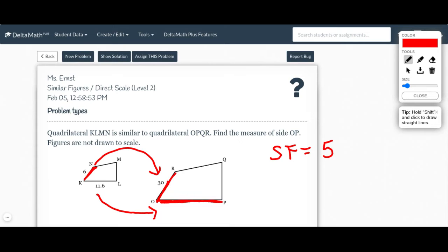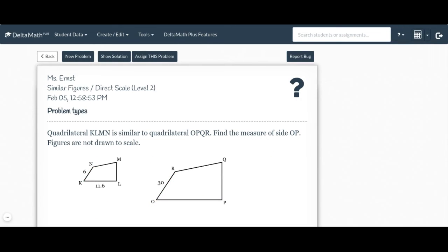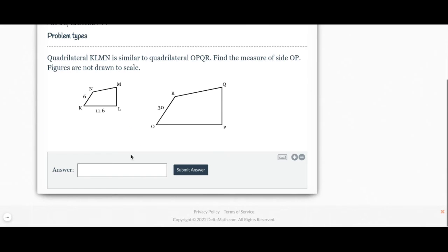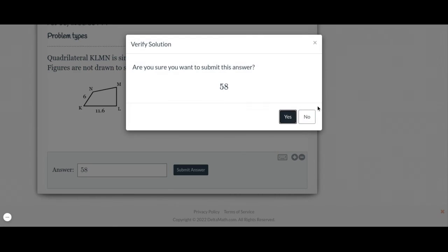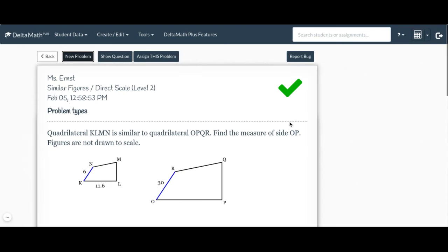So I'm going to use that same scale factor and I'm going to take 11.6 times 5 to get me that side OP that I need there. And that's going to be the answer that we're looking for. So when I do that, I get 58. So I'm going to go ahead and type that in and see if we're good to go. And it looks like we're good.